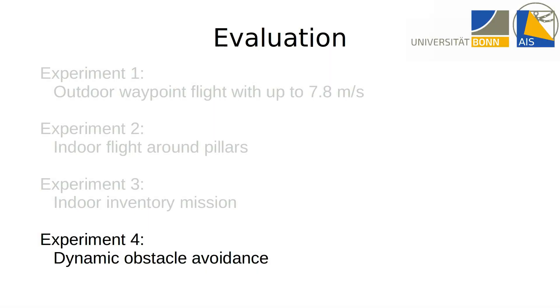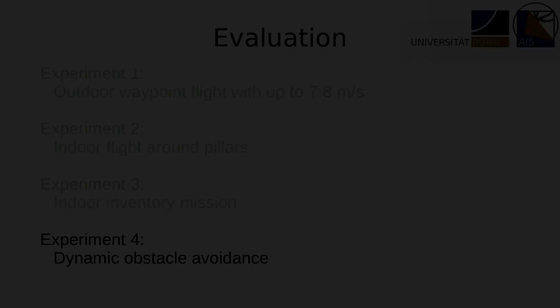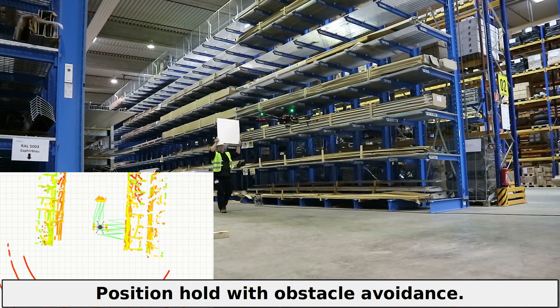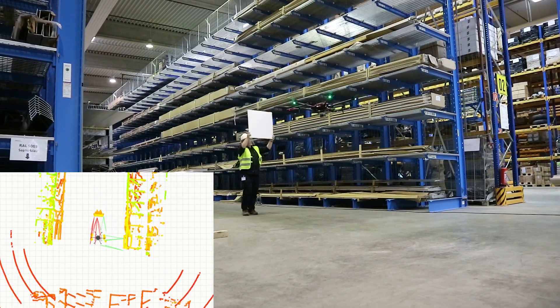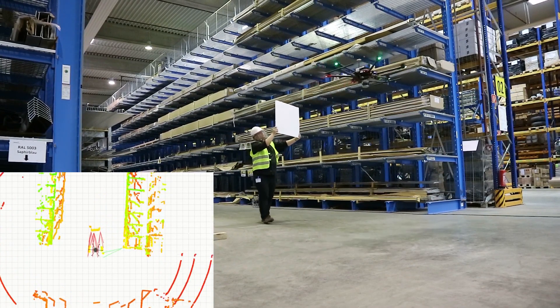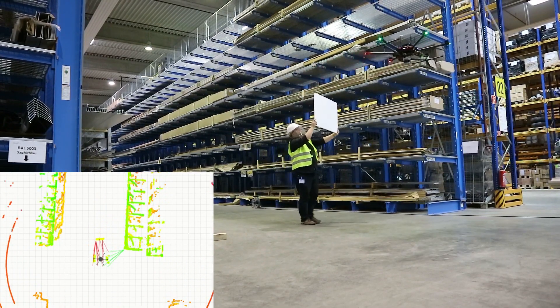In the last experiment, the MAV hovers at a fixed waypoint two meters above the ground. A person approaches the MAV, which avoids the dynamic obstacle by means of our reactive obstacle avoidance and returns to the waypoint when possible.